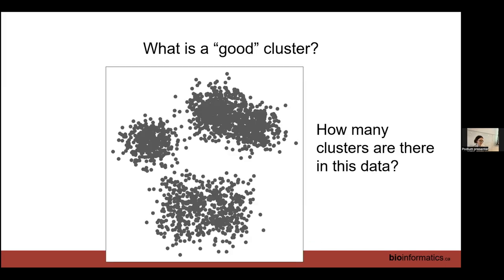Here's some data — how many clusters do you think are in this data? After looking, some people guessed five, some three, some four. The middle option was actually correct, showing that figuring out how many clusters exist in your dataset is really hard — even for humans. Explaining how to do this to a computer is even more challenging.